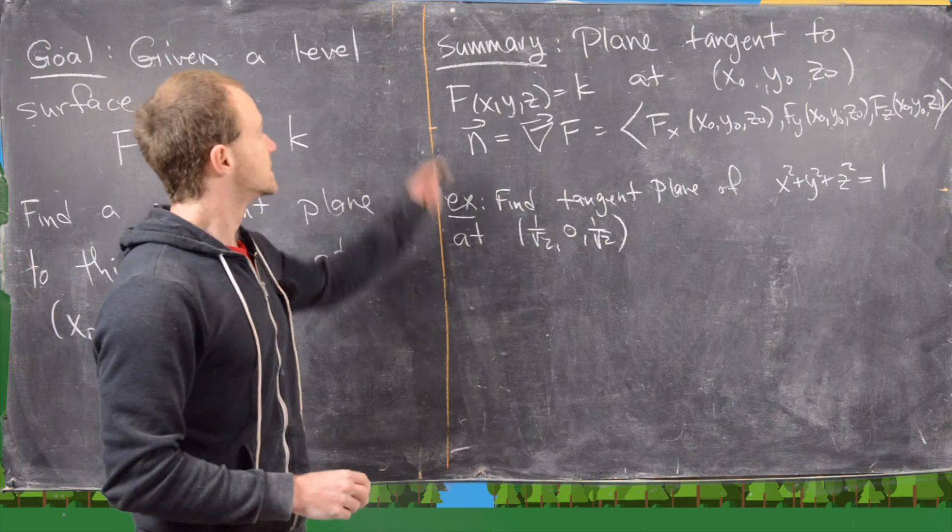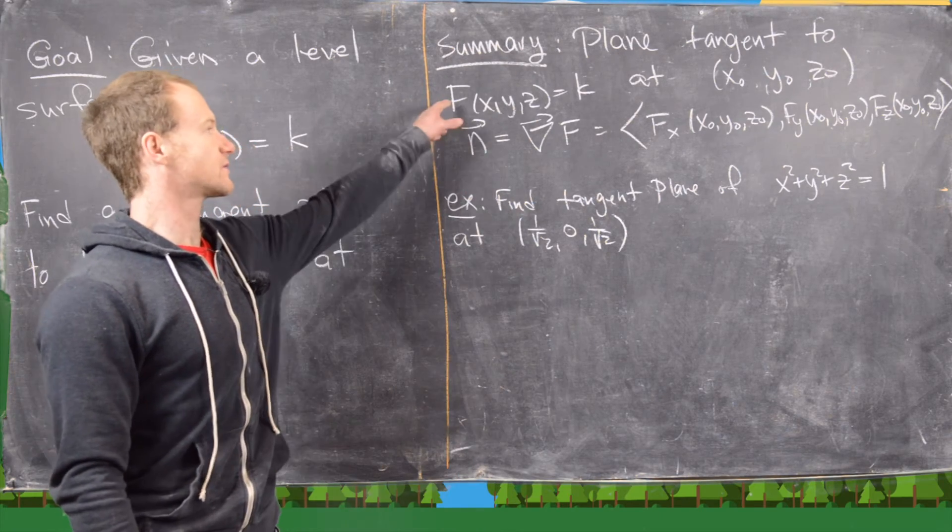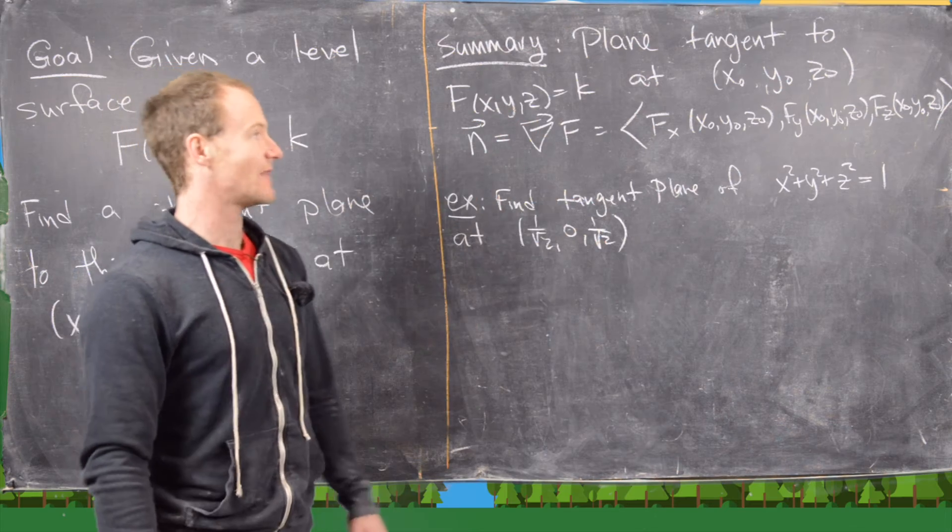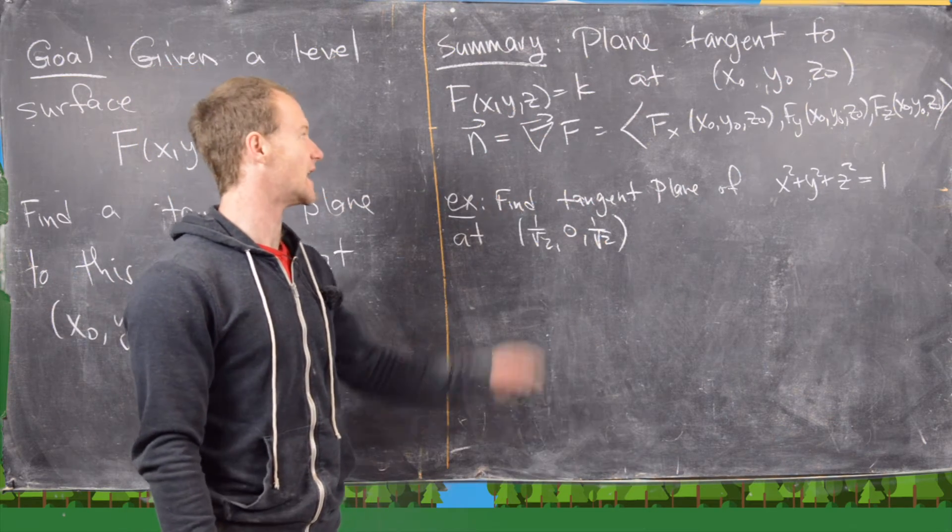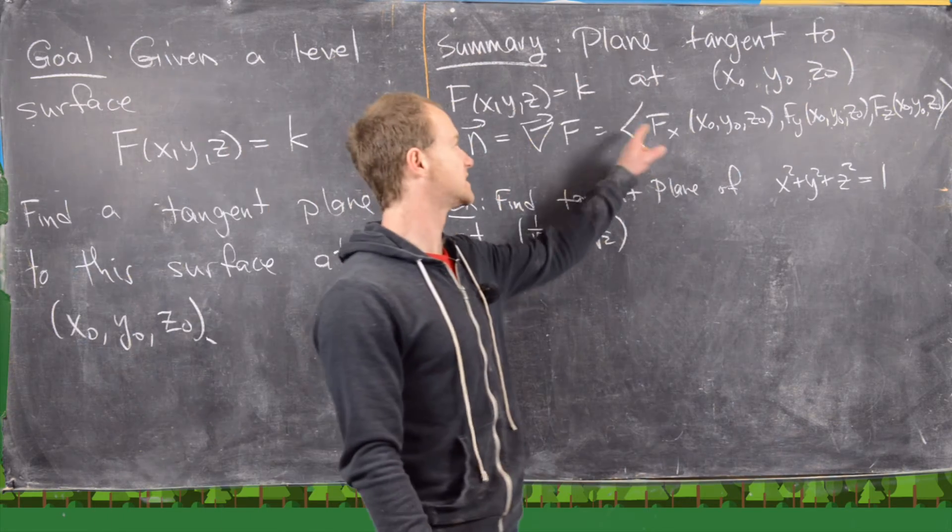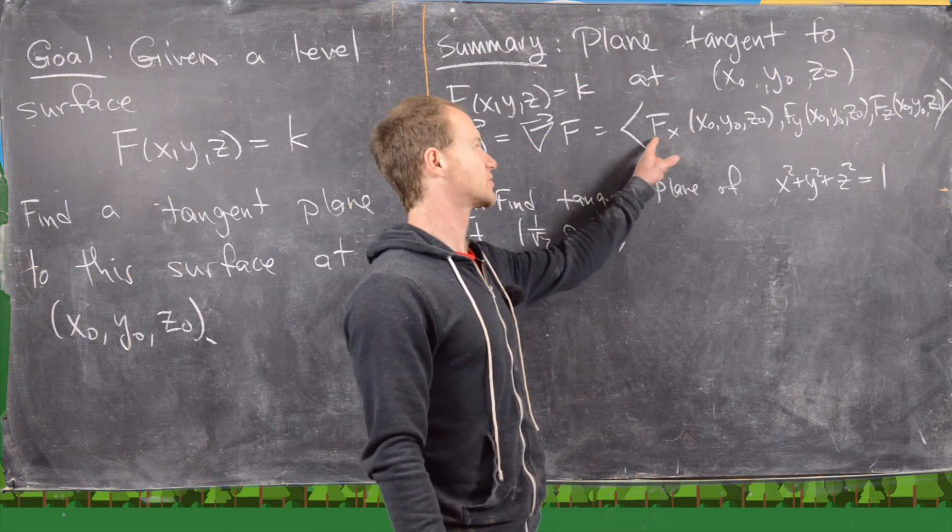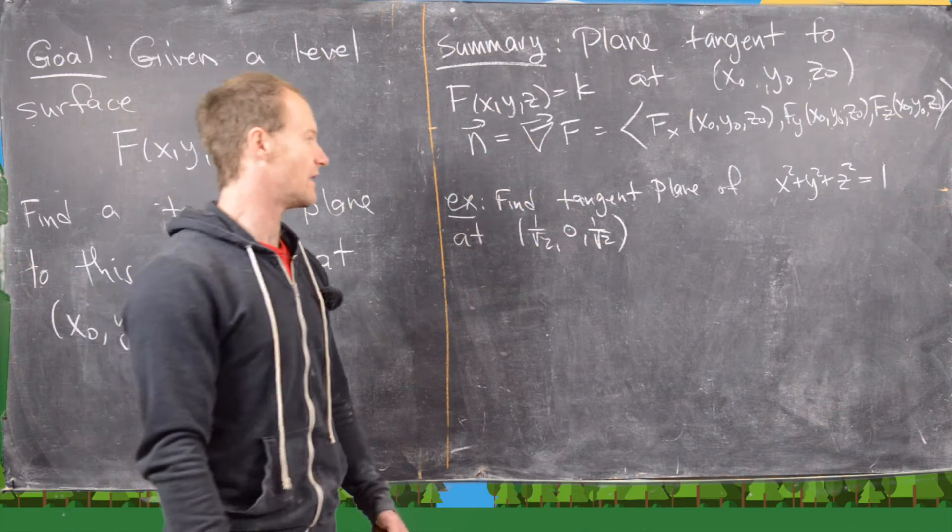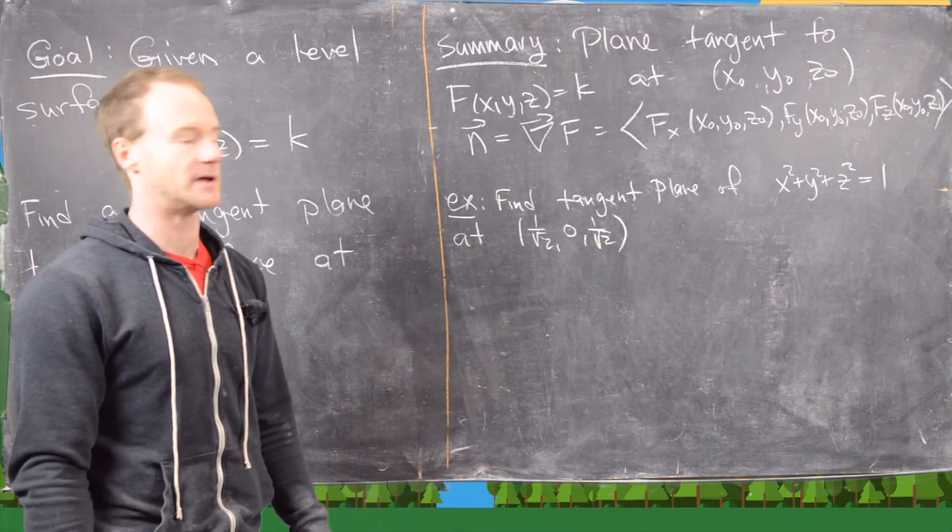So as a summary, let's recall that the plane tangent to this level surface at the point x-naught, y-naught, z-naught has a normal vector given by the gradient at that point. In other words, the vector built by the partial with respect to x at that point, the partial with respect to y at that point, and the partial with respect to z at that point.